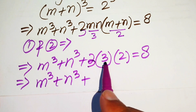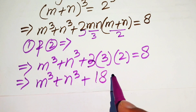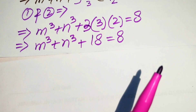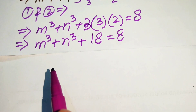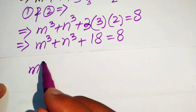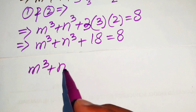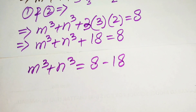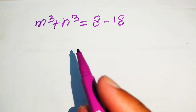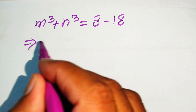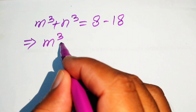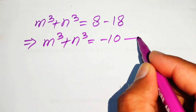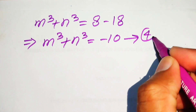3 times 3 is 9, and 9 times 2 is 18, so m cubed plus n cubed plus 18 equals 8. Moving plus 18 to the right hand side: m cubed plus n cubed equals 8 minus 18, which gives m cubed plus n cubed equals minus 10. We call this equation number 4.